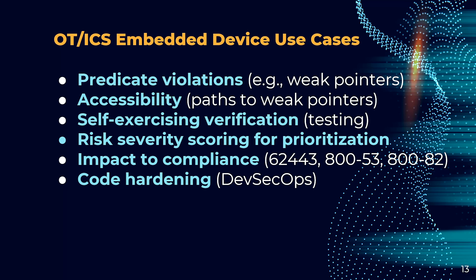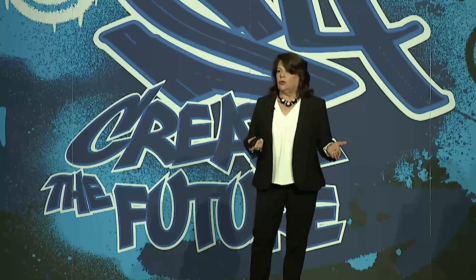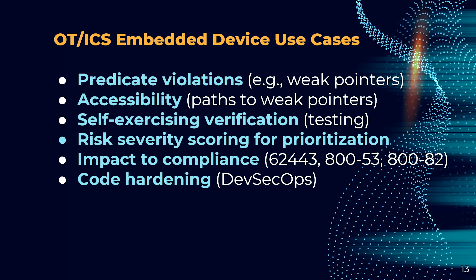This allows you to show proof of the potential zero-day. You can predict violations at the logical programming level — in this case, weak pointers. You can look at accessibility: how can I get to that weak pointer? You can identify possible paths to that weak pointer, then exercise that verification through testing — doing the actual symbolic execution to confirm the location of the weak pointer — and then prioritize the risk based on severity.